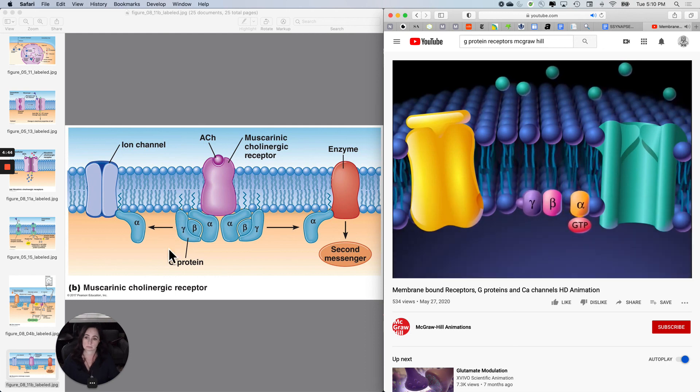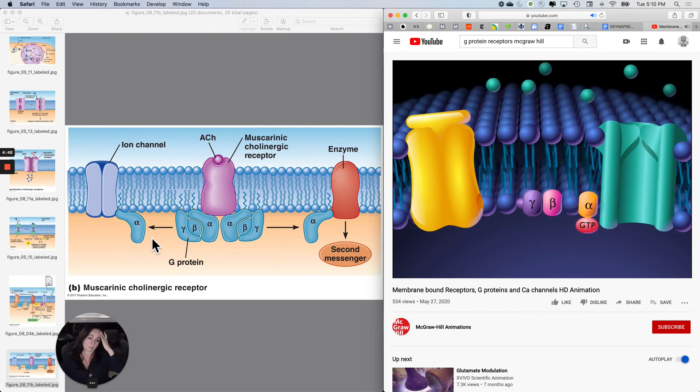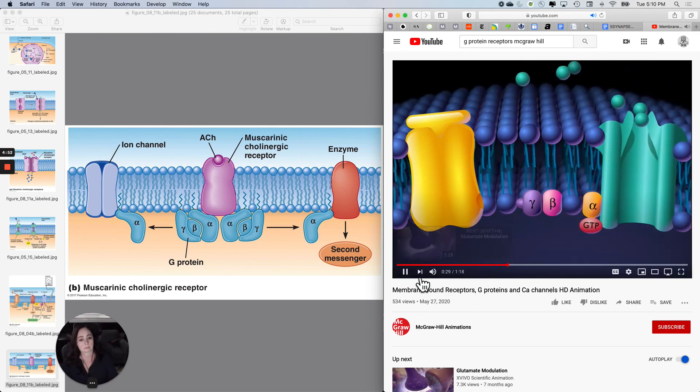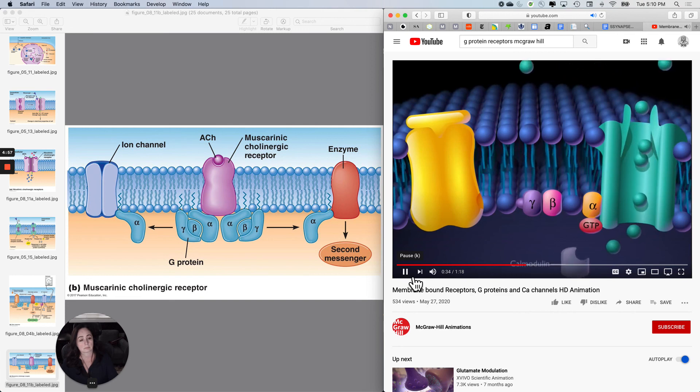The alpha subunit, with guanosine triphosphate attached, binds to the calcium ion channel, causing the calcium ion channel to open. Calcium ions diffuse into the cell and combine with calmodulin.